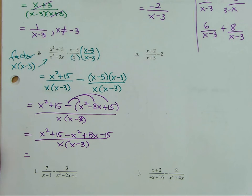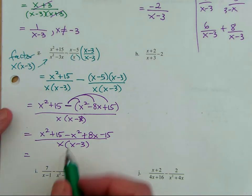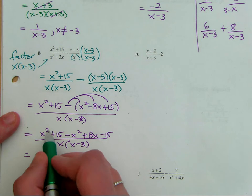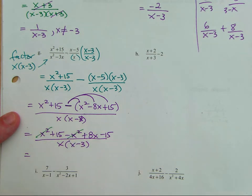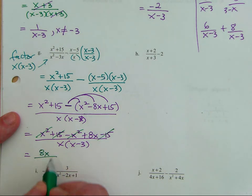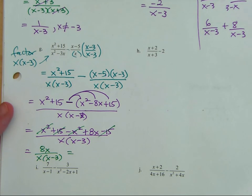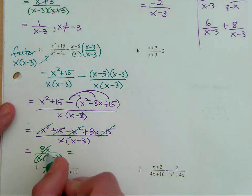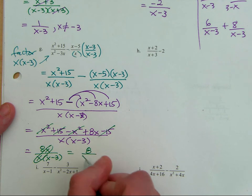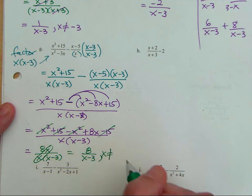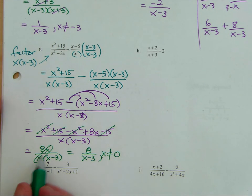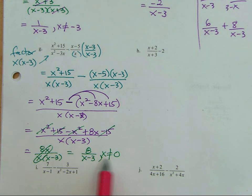What do I get if I simplify that numerator? I have some like terms. X squared cancels with X squared — X squared minus X squared is nothing. 15 minus 15 is zero. So I have 8X over X times X minus 3. That will reduce: the X's cancel because X divided by X is just one. So I have 8 over X minus 3. X cannot equal zero — because of canceling out those X's, we retain that restriction on the domain.